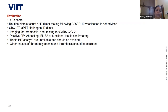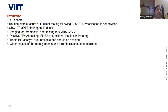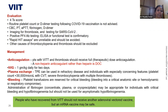Evaluation for VITT uses the 4T score as in HIT. However, routine platelet count and D-dimer testing following COVID-19 vaccination is not advised due to very low incidence. CBC, PT, APTT, fibrinogen, and D-dimer must be done to rule out DIC. Thrombosis needs documentation by imaging, and SARS-CoV-2 testing should be done. Positive platelet factor 4 antibody testing by ELISA and functional tests are confirmatory. Rapid HIT tests are unreliable and should be avoided for VITT. Other causes of thrombocytopenia and thrombosis must be excluded.